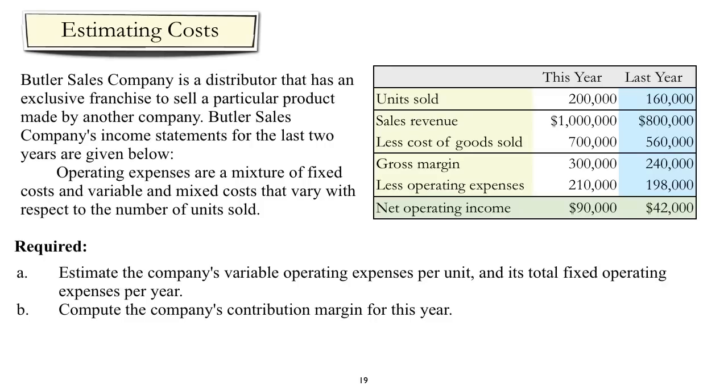Finally, we'll do an example where we use the high-low method in a somewhat different situation. Here, we have a company that is a distributor, and we have two years' worth of either real or forecasted data. What we're told is that the costs come in two flavors: cost of goods sold and operating expenses. We'll assume the cost of goods sold is variable, since that would be consistent with a distributor that buys its inventory. But the question then is, what part of the operating expenses are fixed and what part are variable? To solve this, we'll use the high-low method.